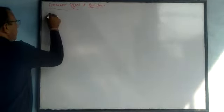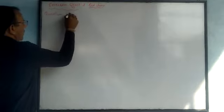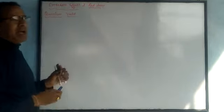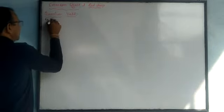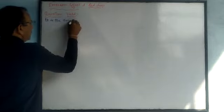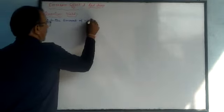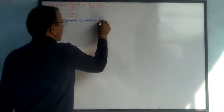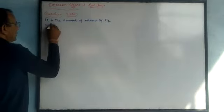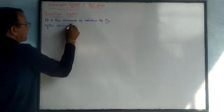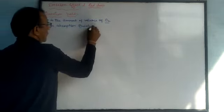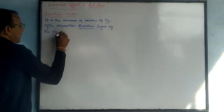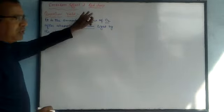Firstly we will discuss quantum yield. What is quantum yield? Quantum yield means the amount of oxygen released by the plant during the absorption of quantum light energy. The amount of oxygen released after absorption of quantum light by the plant is called quantum yield.